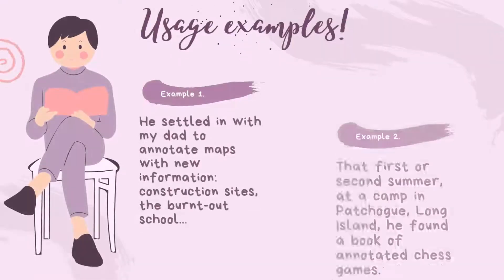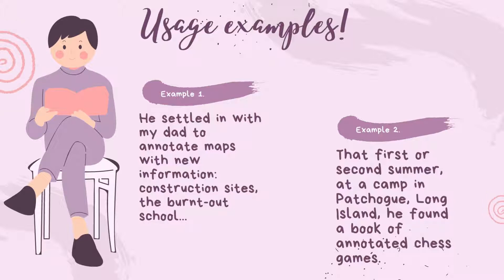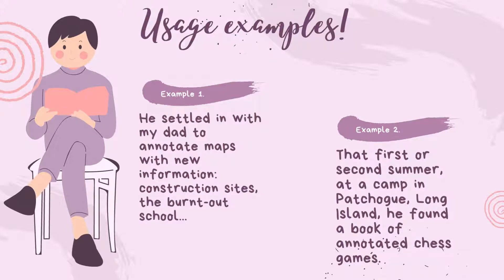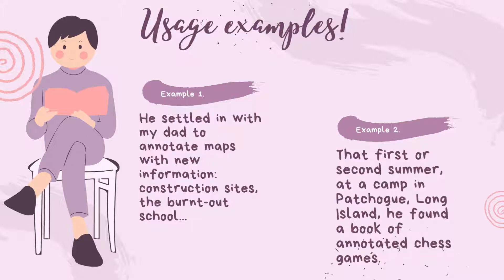Usage Examples. Example 1: He settled in with my dad to annotate maps with new information — construction sites, the burnt-out school. Example 2: That first or second summer, at a camp in Patchogue, Long Island, he found a book of annotated chess games.